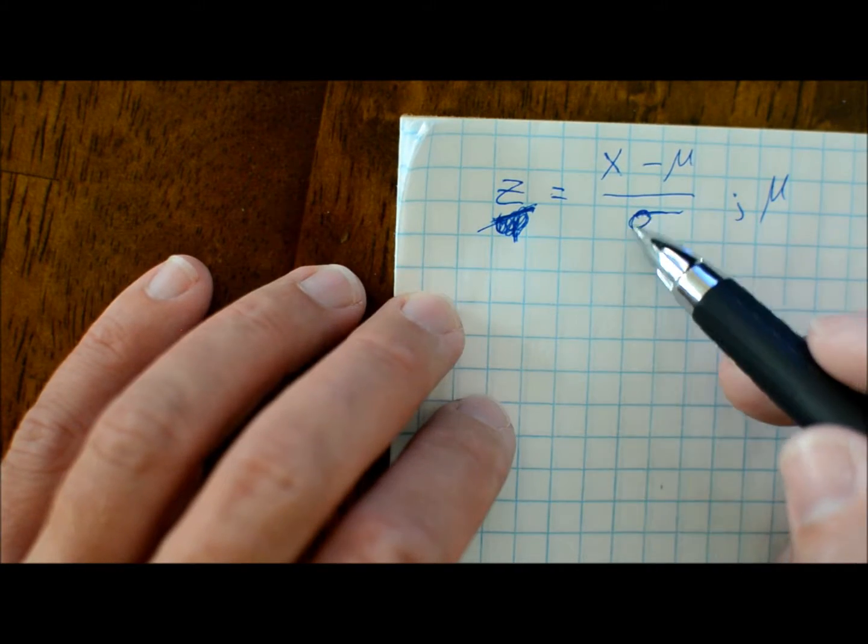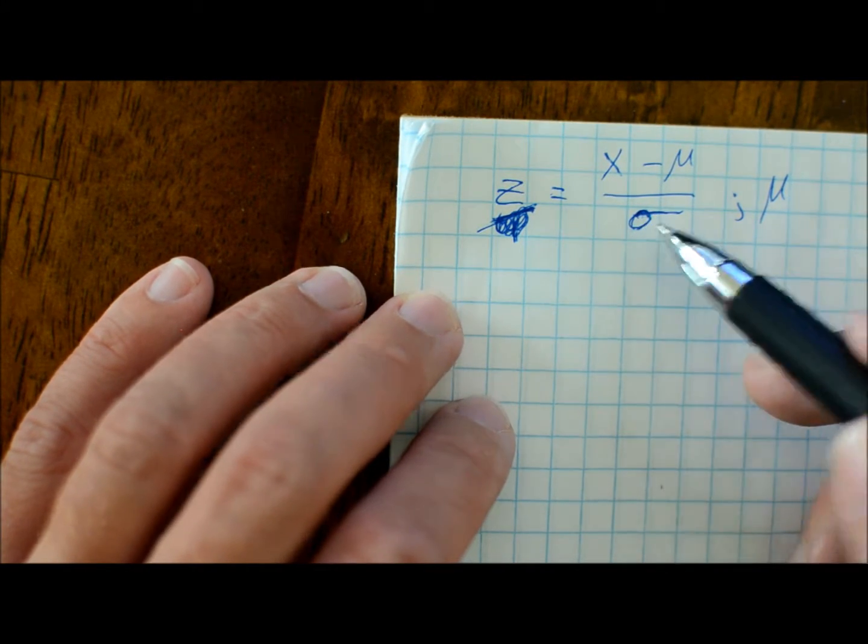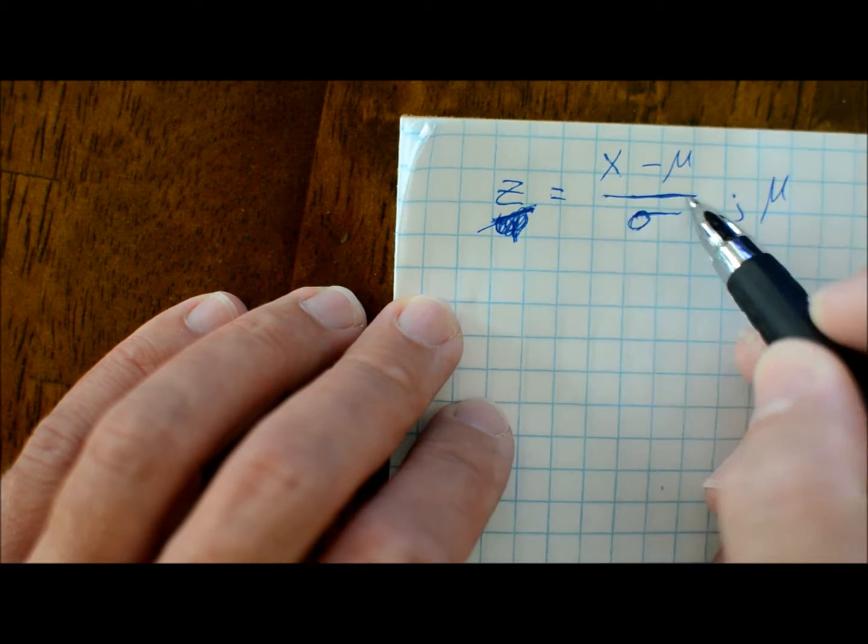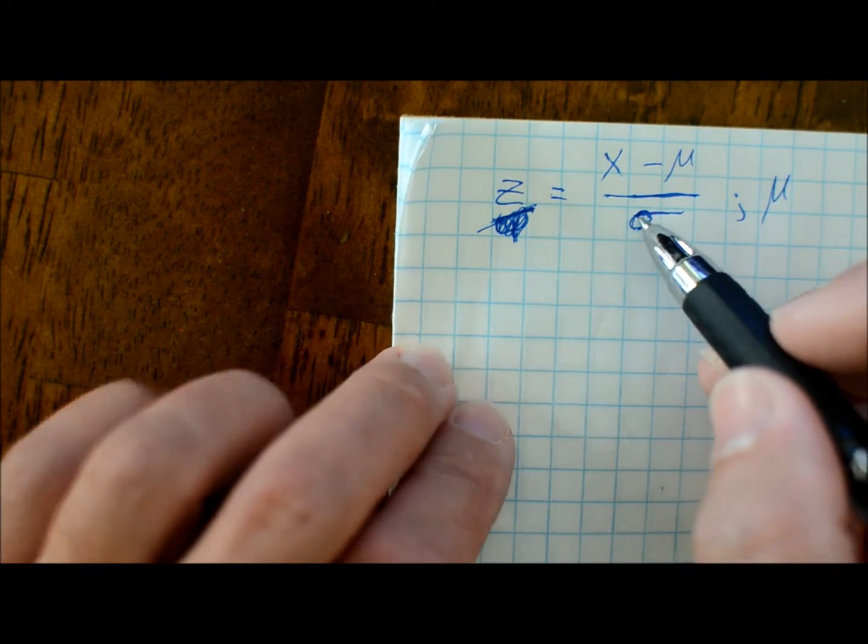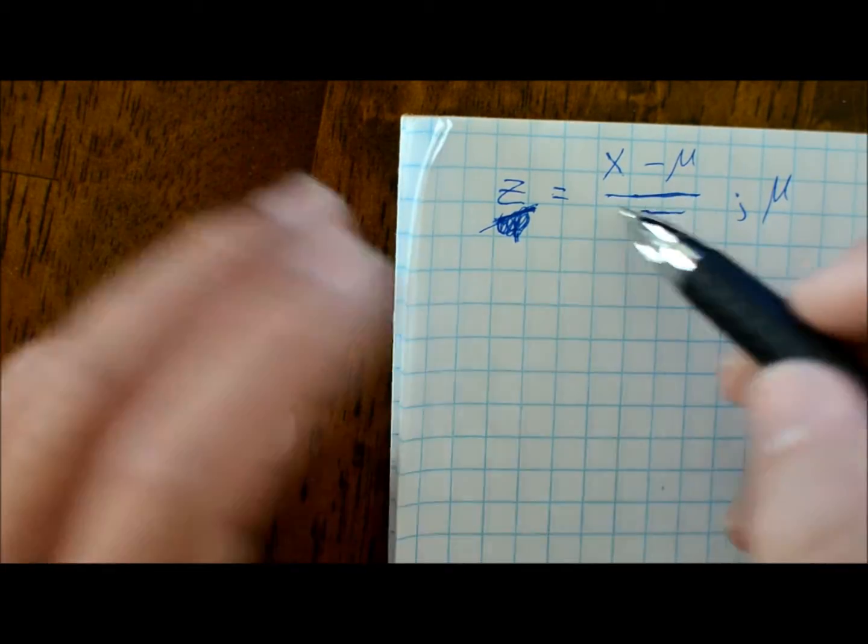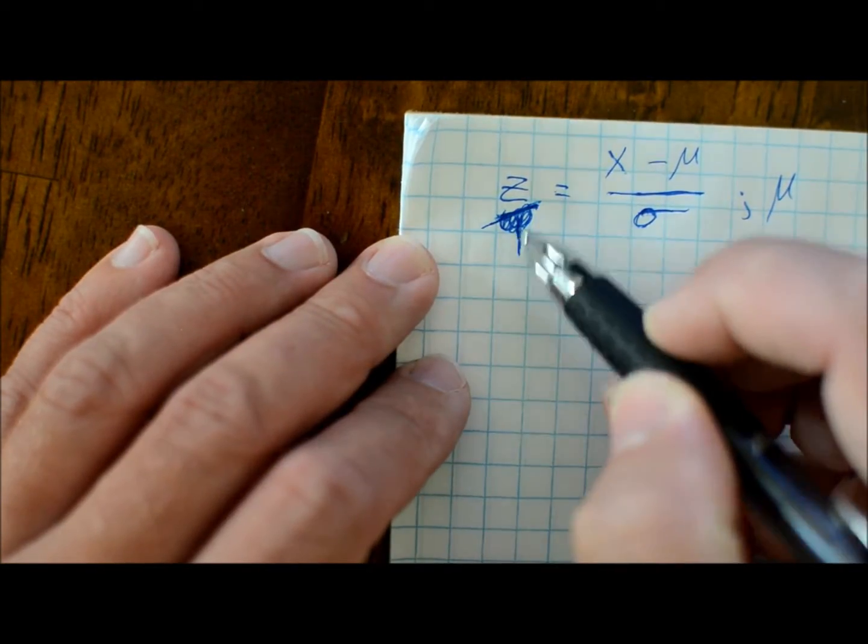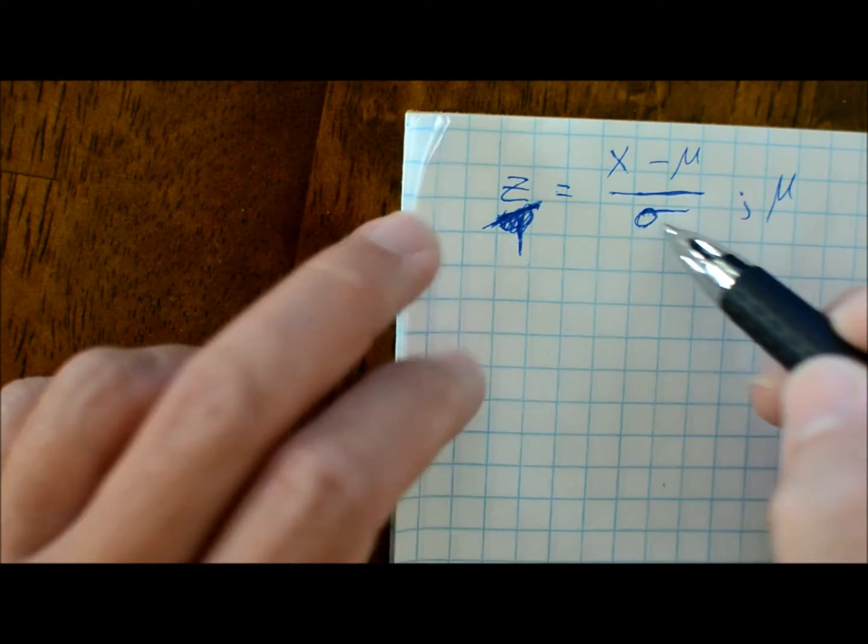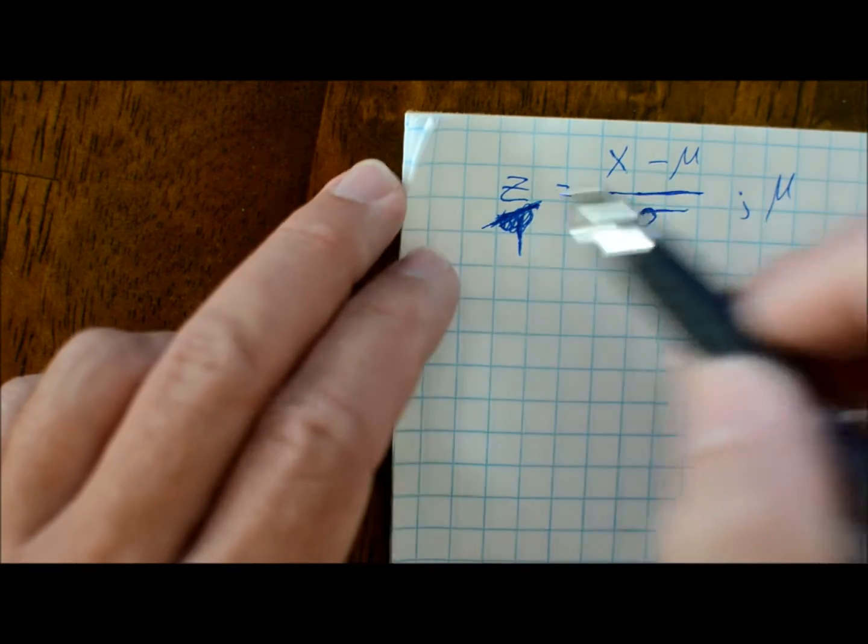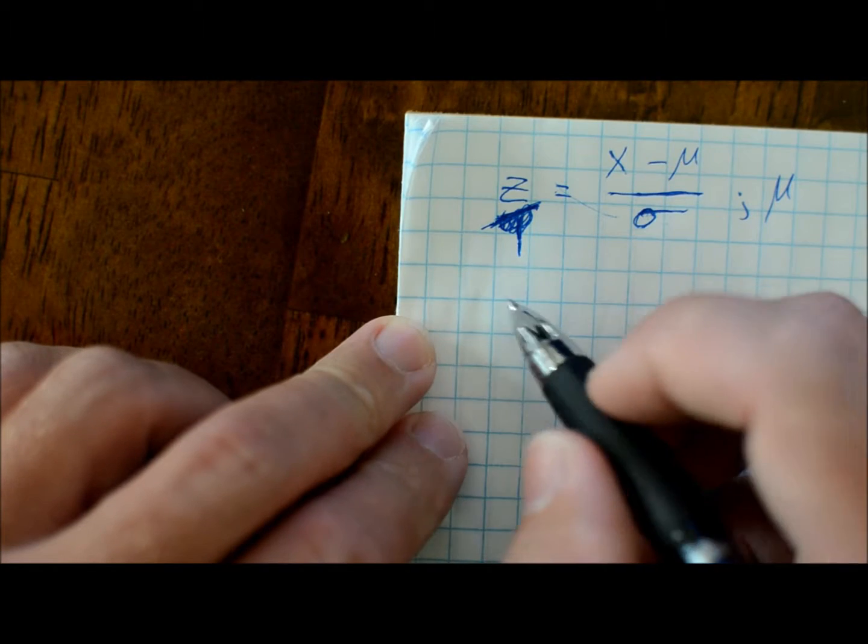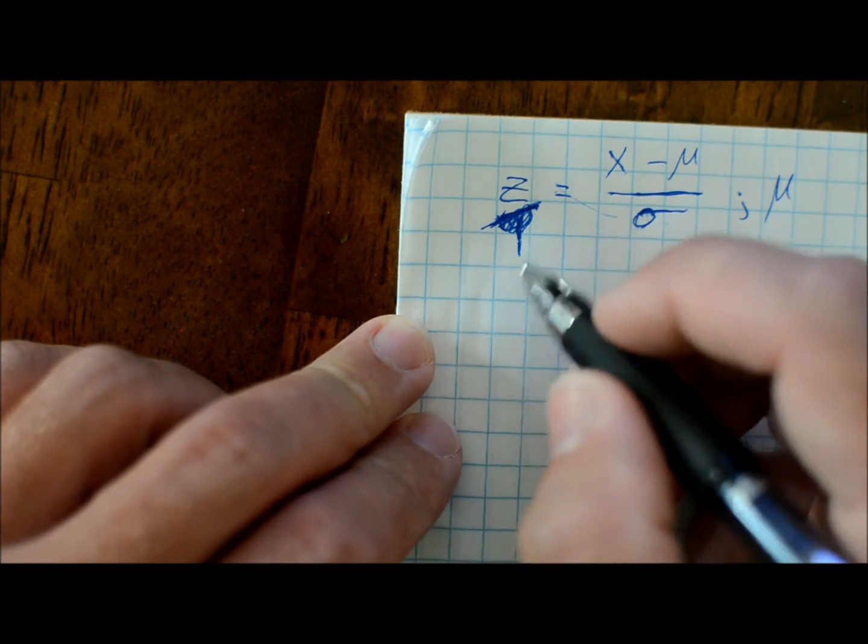So if we multiply both sides by sigma - another way you might think of this is if a term is in the denominator, you can move it over. It's not just moving it, though - you're multiplying both sides by it. It's just a different way to visualize it.